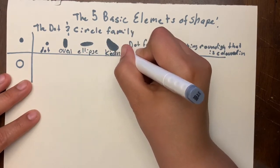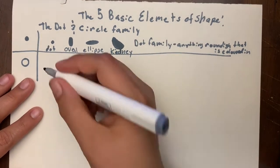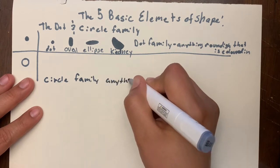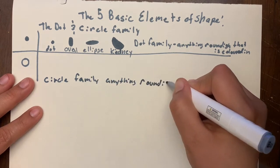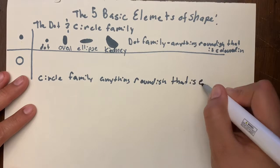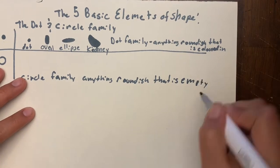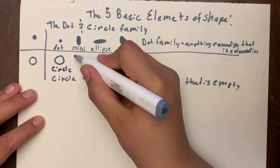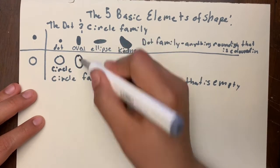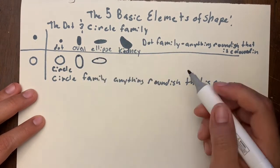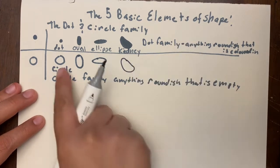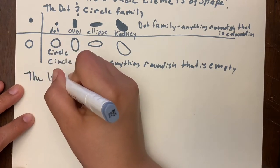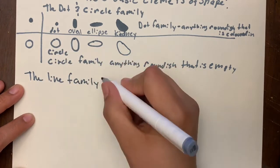For the circle family, it is anything roundish that is empty — these ones are not colored in. That's my circle, my oval, the ellipses, and the kidney. Next up is the line family; of course we have a straight line, a curved line, and our angles.